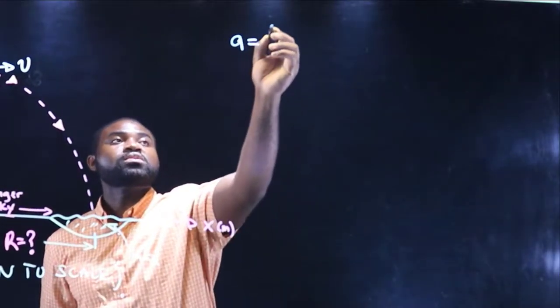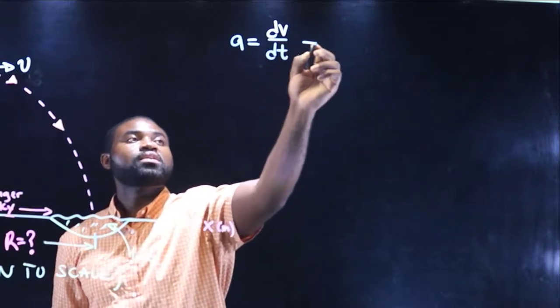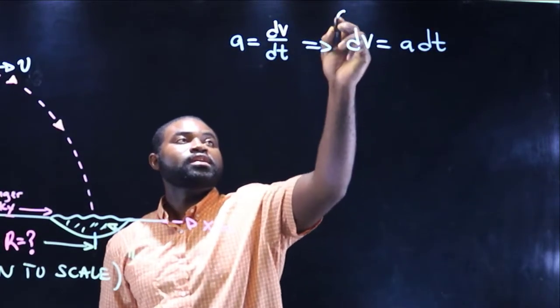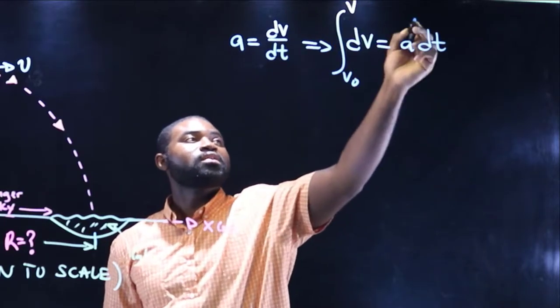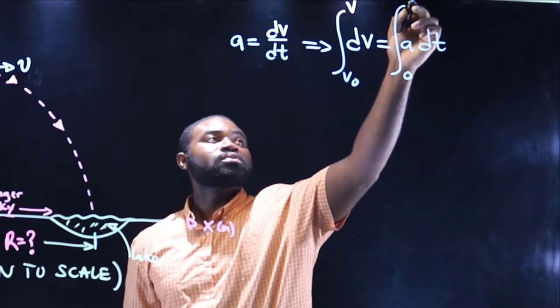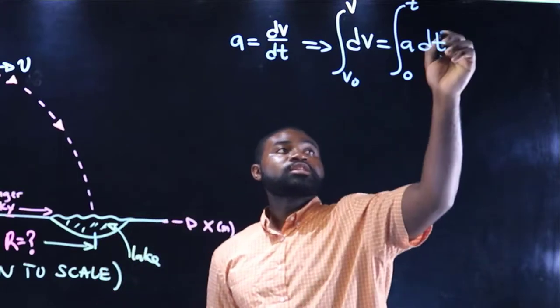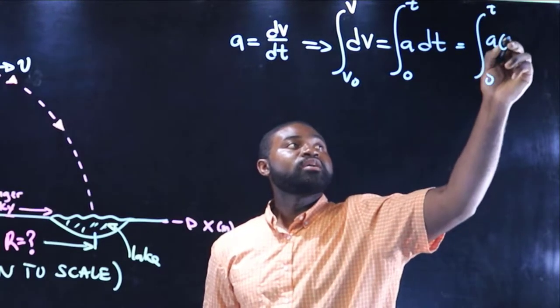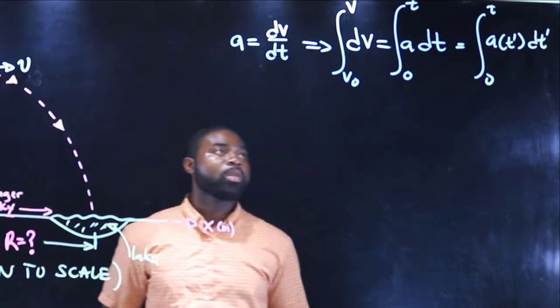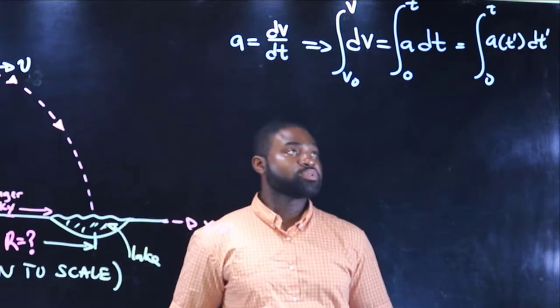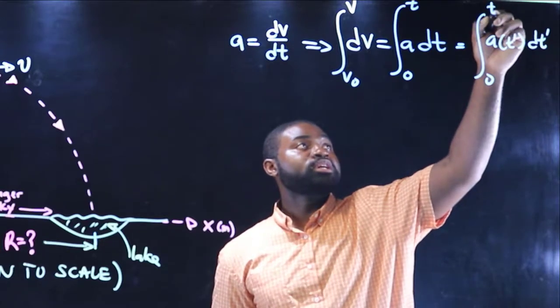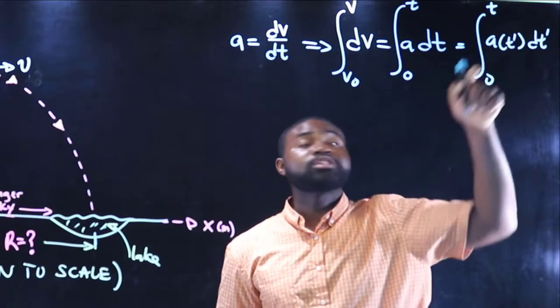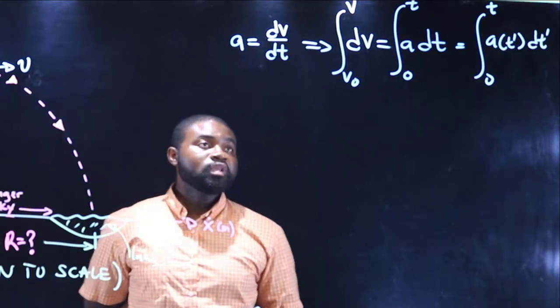In this case, what do we know? We know that generally a is equal to dv over dt. This would mean that dv is equal to a dt. So if we integrate both sides from v initial to v, and we could also do this from 0 to t. Now I could put here t prime. This is the same as the integral from 0 to t, a(t prime) dt prime, where t prime is just a dummy variable.